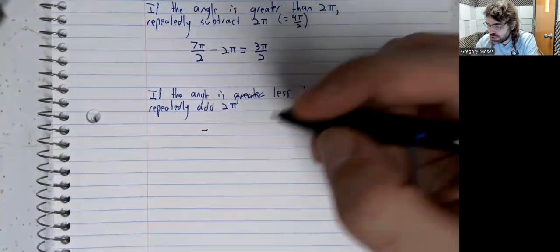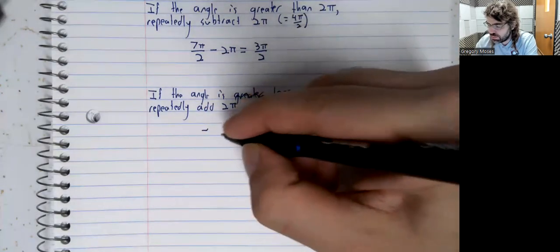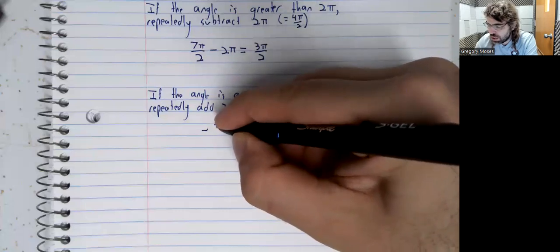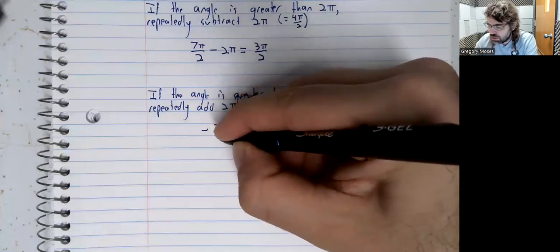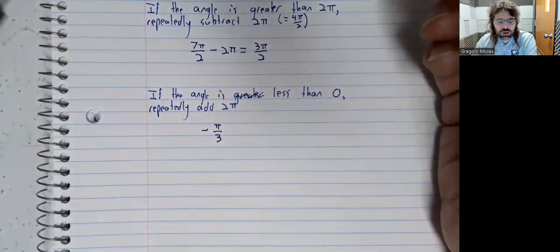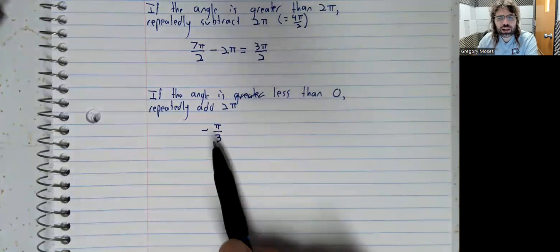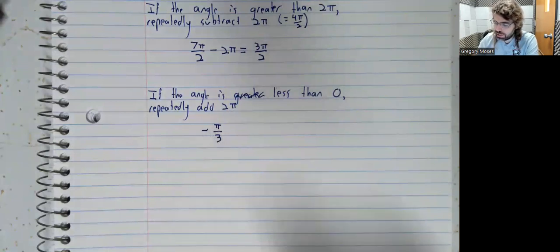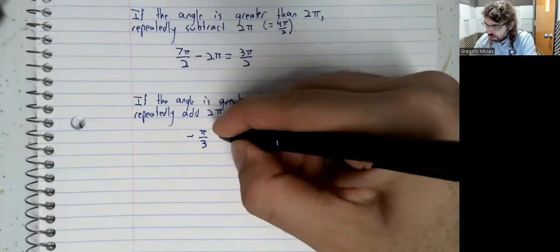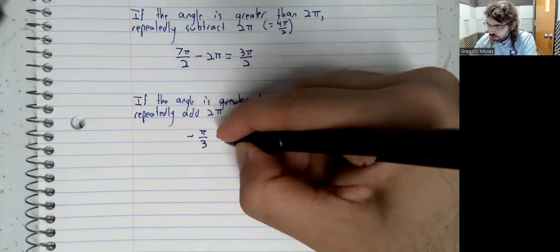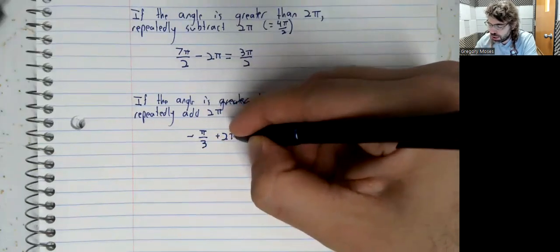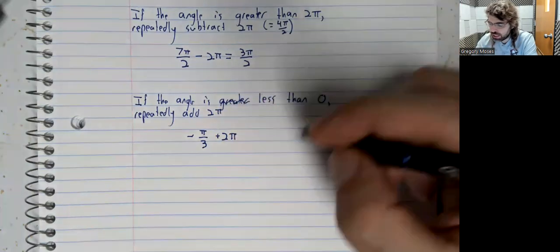What if you have negative pi over 3? And you want a coterminal angle between zero and 2 pi? Well, you add 2 pi until you get into that interval.